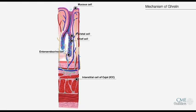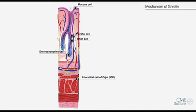The ghrelinergic cells produce ghrelin. Some of the ghrelin travels through the blood vessels and nerves to the brain. Others are electrical signals that travel back through the innervating nerves and the enteric nerves and engage with the interstitial cells of Cajal, resulting in stomach contractions. Also located along the stomach wall are ghrelin receptors, where ghrelin activates stomach motility at a local level.